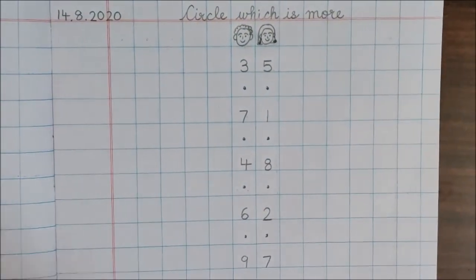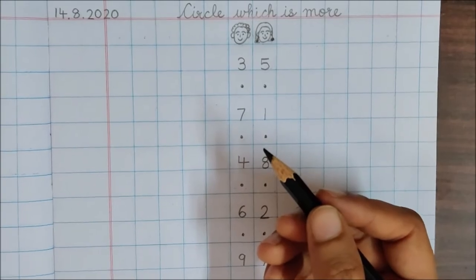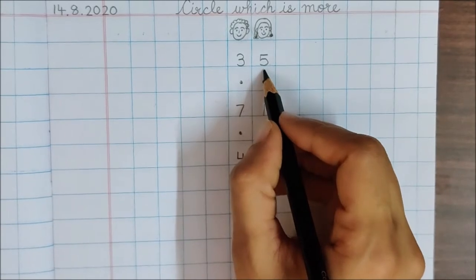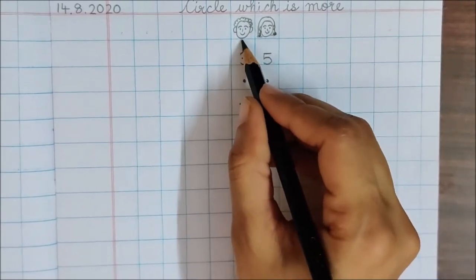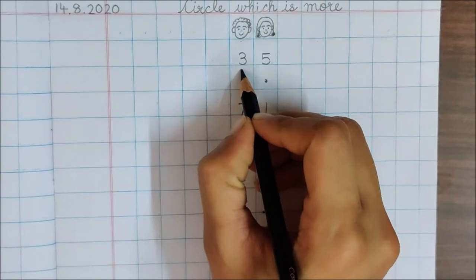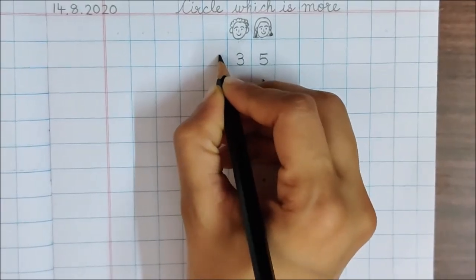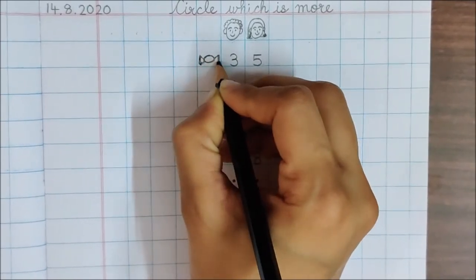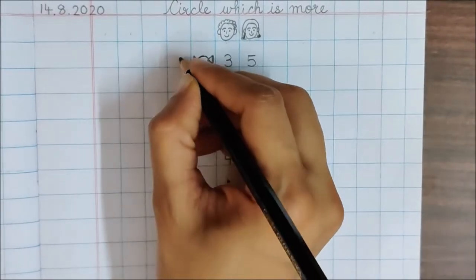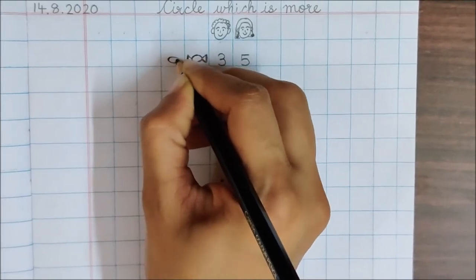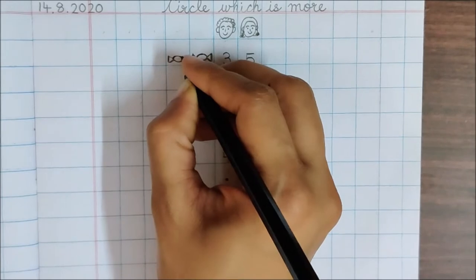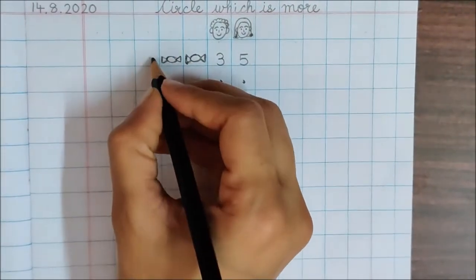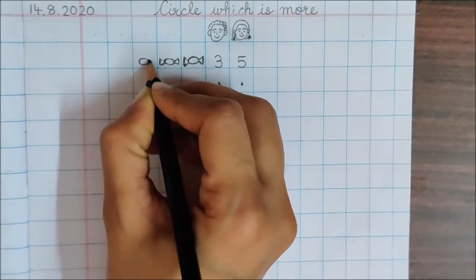Now children, take your black colour pencil. See here, we have written numbers 3 and 5. Your papa got 3 toffees for you. So here, draw 3 toffees. 1, in the next box, 2. I am drawing 1 toffee in 1 box. Now here, 3.